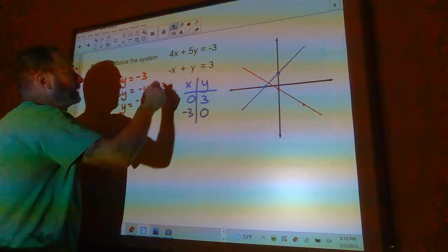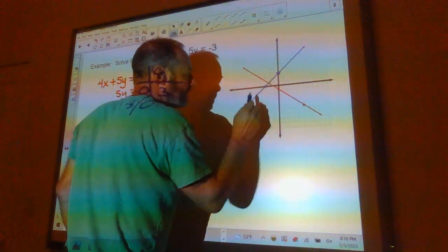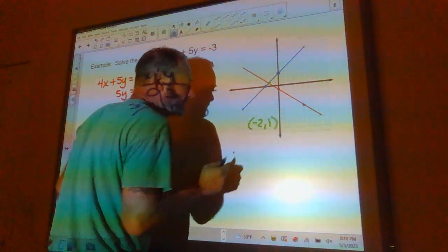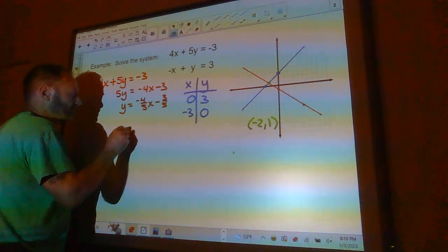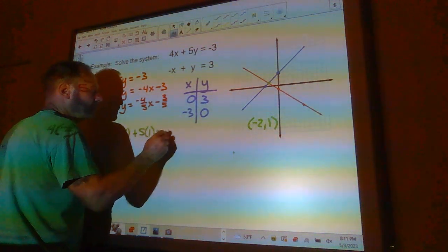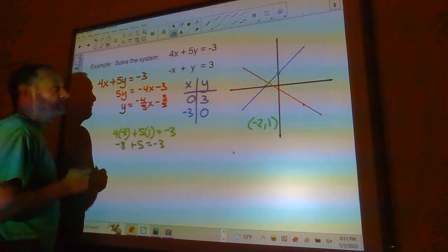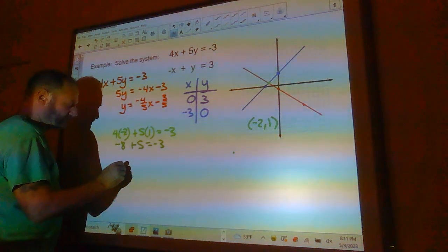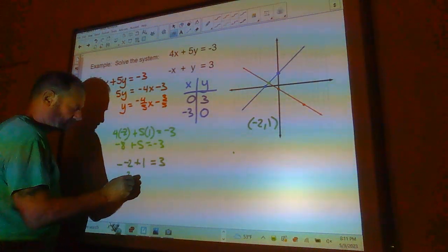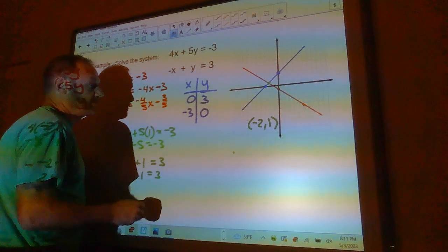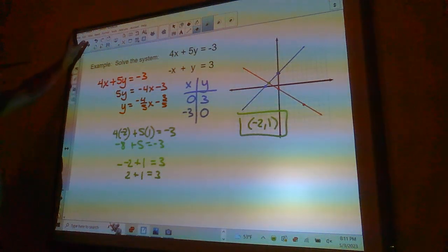And it looks like it's going to intersect right there. That appears to be the point negative 2, 1. So let's check it. 4 times negative 2 plus 5 times 1 would equal negative 3. So this would be negative 8 plus 5 is negative 3. That's a true statement. And the next one would be negative negative 2 plus 1 should equal 3. And of course, negative negative 2 is 2 plus 1 is 3. That is also true. So now I got that one done.